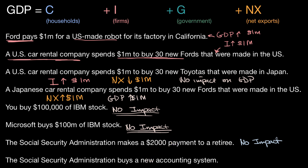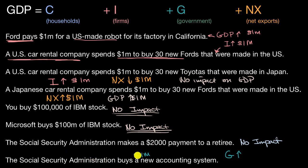We can contrast that with the next scenario: the Social Security Administration buys a new accounting system. In this scenario, the government is buying a good or service — possibly computers, software, and consultants to implement it. So it is the government paying for goods and services. The government spending category would go up by however much they spend — say $1 million — and therefore GDP would go up by $1 million.